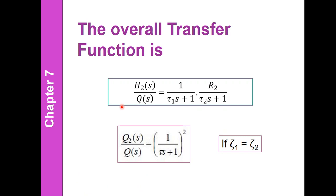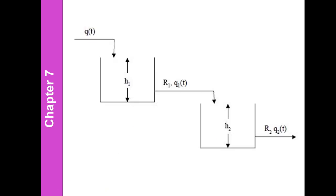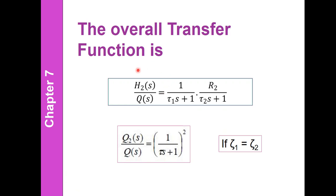Determining the overall transfer function of this system requires performing a material balance for both tanks. Using the individual material balances, we incorporate the Laplace transform to determine the individual Laplace transforms of each tank. The final transfer function of the system is the product of the two individual transfer functions of the tanks, as shown in the previous slide. Determining the overall transfer function of the two tanks in series is simply a multiplication of their individual transfer functions.